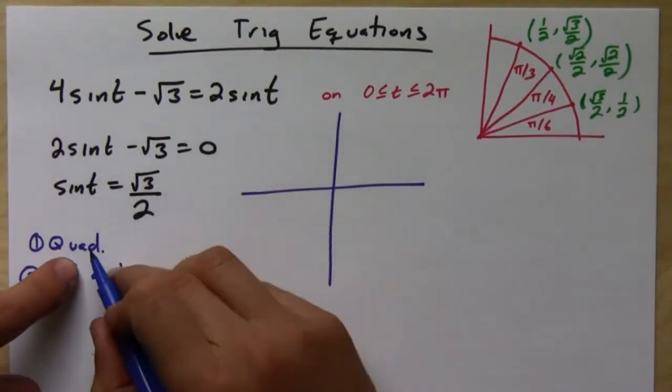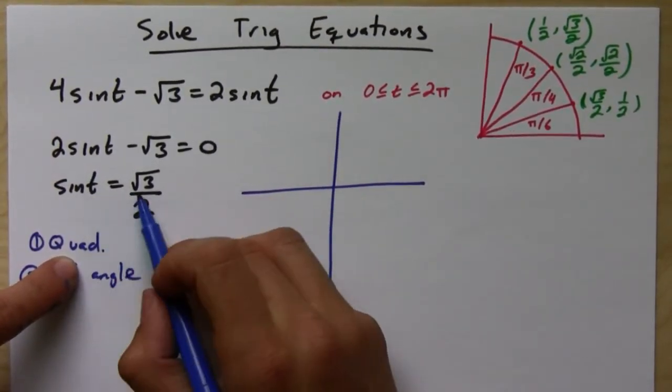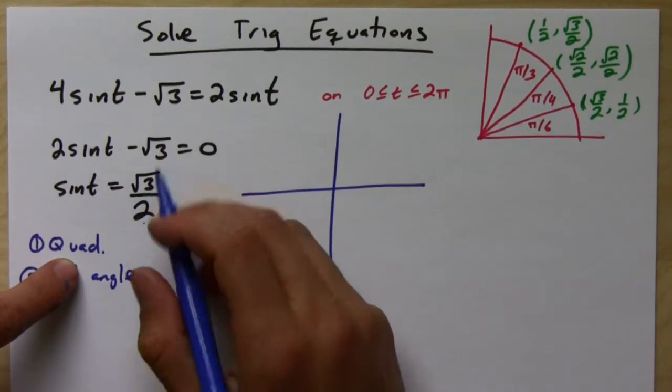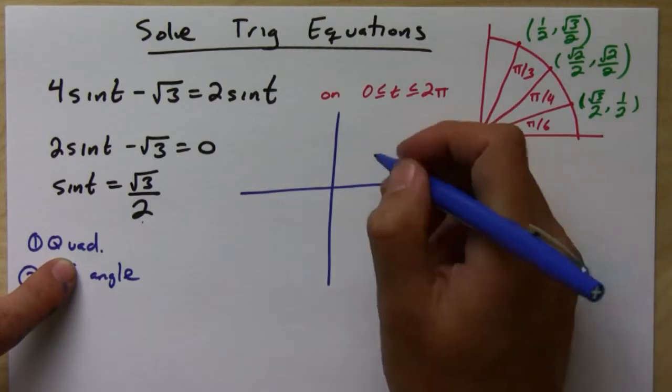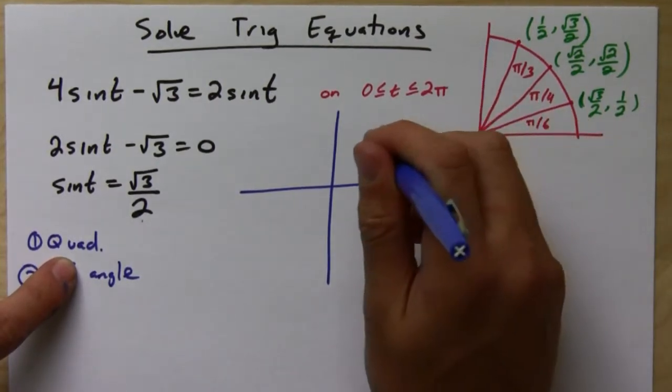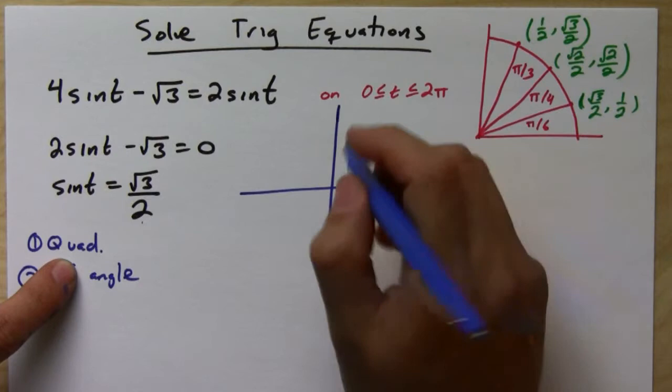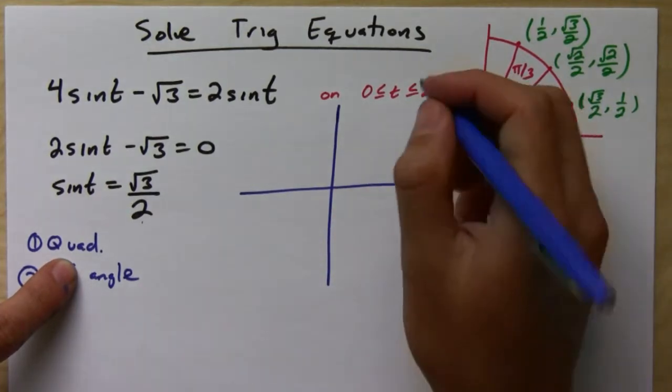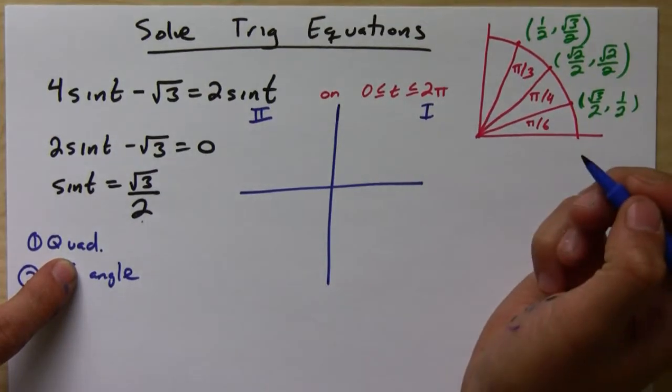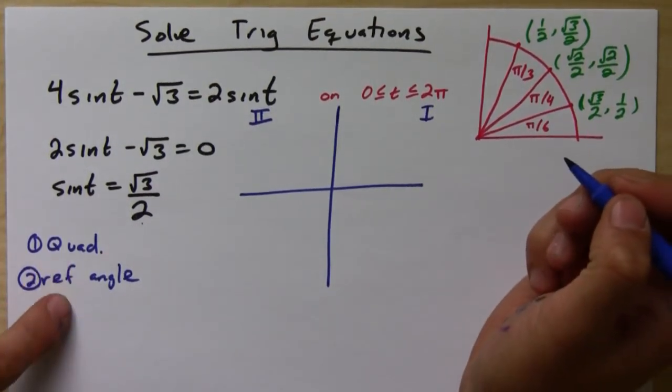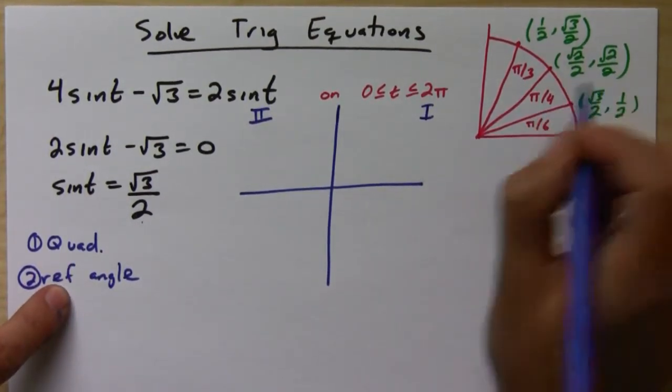So what you're looking for is, first of all, it doesn't really matter the order, but you need two things. You need the quadrant and you need the reference angle. So let's do quadrant, reference angle. Okay. Remember, the quadrant you get from whether the value is positive or negative. So since root 3 over 2 is positive, you go back to your Cartesian plane. You go, okay, where is sine positive? Well, in quadrants 1 or 2. Okay. So you know that.